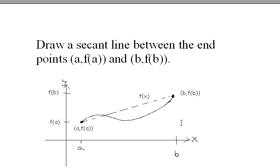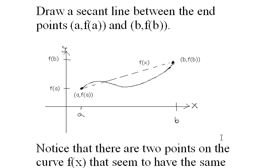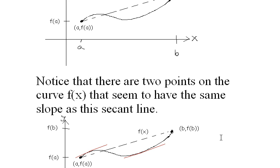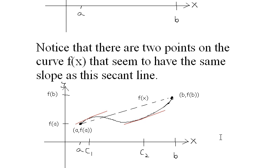And a secant line is just simply a line between any two points on a curve, and we're drawing it between the endpoints. Notice that there are two points on the curve that seem to have the same slope as that secant line.